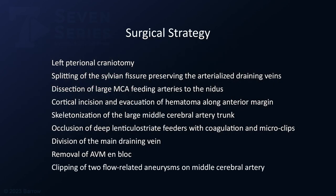Surgical strategy consisted of a left pterional craniotomy, splitting of the sylvian fissure, preserving the arterialized draining veins, dissection of large MCA feeding arteries going into the nidus, a cortical incision to evacuate the hematoma along the anterior margin, skeletonization of large middle cerebral artery trunks, occlusion of deep lenticular striate feeders with coagulation or microclips, division of the main draining vein, en-bloc resection of the AVM, and finally, clipping of two flow-related aneurysms on the middle cerebral feeding artery.